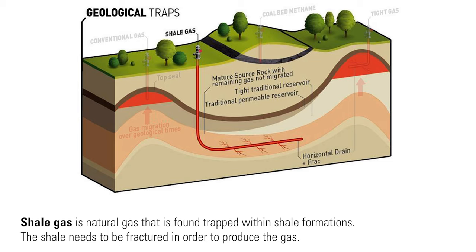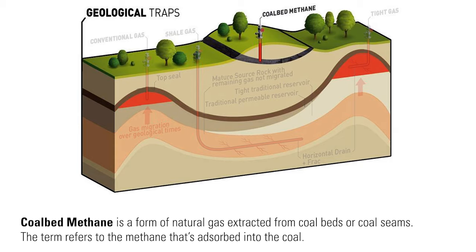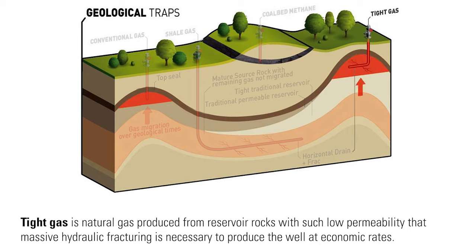The shale needs to be fractured in order to produce the gas. Coal bed methane is a form of natural gas extracted from coal beds or coal seams — the term refers to methane that has been absorbed into the coal. Tight gas is natural gas produced from reservoir rocks with such low permeability that massive hydraulic fracturing is necessary to produce the well at economic rates.